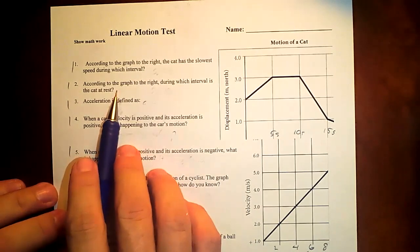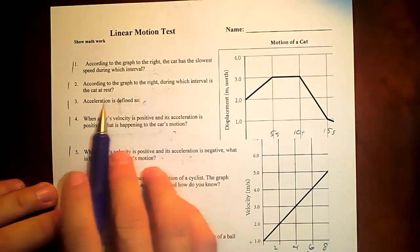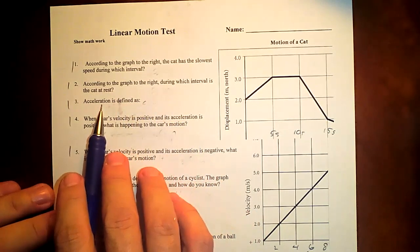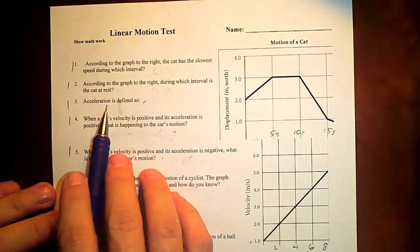It's going slowest when it's stopped. And number two, where is it at rest? Where it stopped. Number three, acceleration is defined in a change of speed or direction because either one of those is a change of velocity.